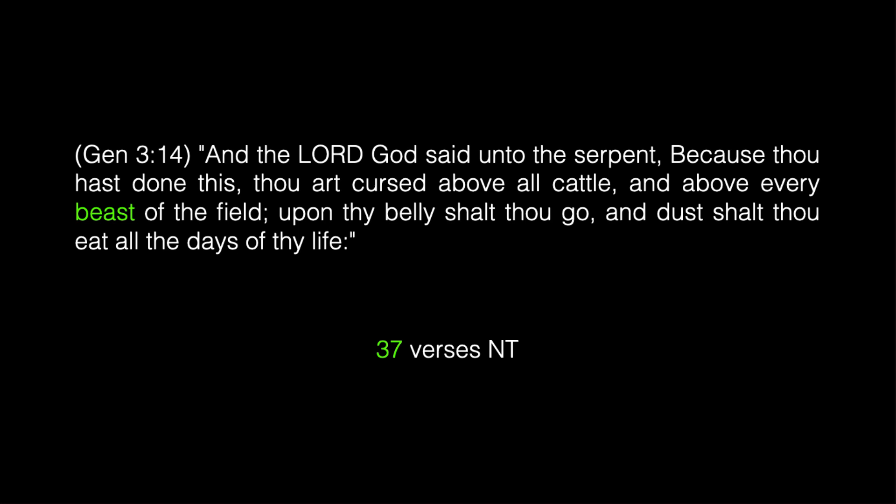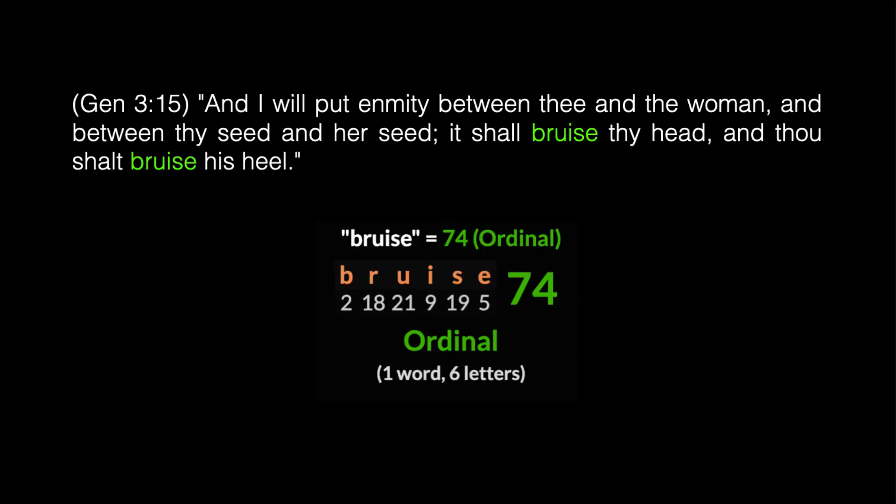Now think about the connection of the serpent with the crucifixion. Jesus says, 'As Moses lifted up the serpent in the wilderness, so shall the Son of Man be lifted up.' Verse 15 — the first prophecy in the Bible: 'And I will put enmity between thee and the woman, and between thy seed and her seed. It shall bruise thy head, and thou shalt bruise his heel.' The word 'bruise' has a value of 74 — the value of the name Jesus. Notice the prophecy is 'her seed.' How many genes were in the mitochondrial DNA? The 37 genes that you get from your mother.